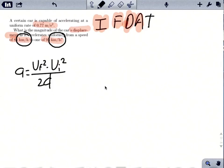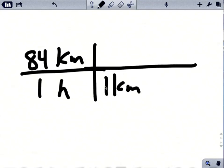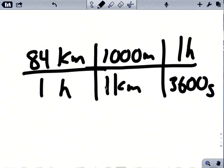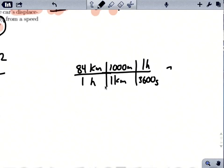So the first thing we have to do is convert our 84 kilometers an hour to meters per second. So we take our 84 kilometers in one hour and we convert that into one kilometer. There's 1,000 meters and in one hour there are 3,600 seconds, which that will give me an initial velocity of right around 23.33 meters per second.